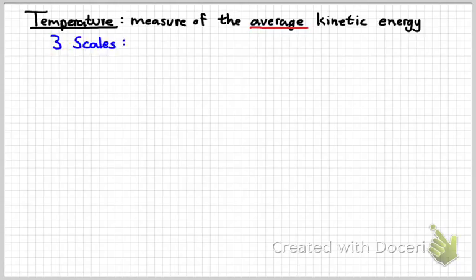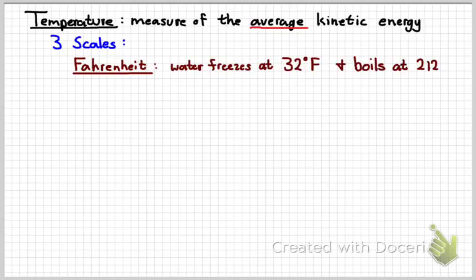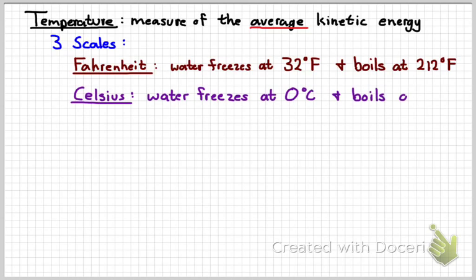There's three temperature scales we need to know. The first is the Fahrenheit scale. It's defined as water freezing at 32 degrees and boiling at 212 degrees. The Celsius scale, which is what we typically use in science, water freezes at zero degrees and boils at 100 degrees Celsius.